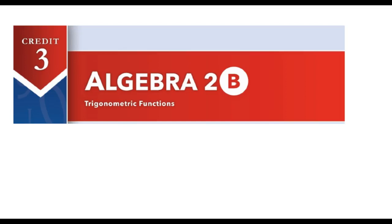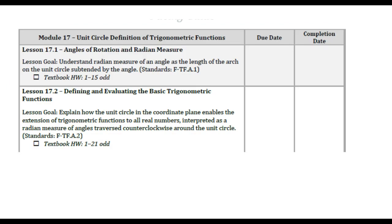Hello and welcome back to Algebra 2B Credit 3, where we'll be discussing functions of a trigonometric nature. In this credit we'll be going over 17.1 angles of rotation and radian measure, 17.2 defining and evaluating these basic trigonometric functions.